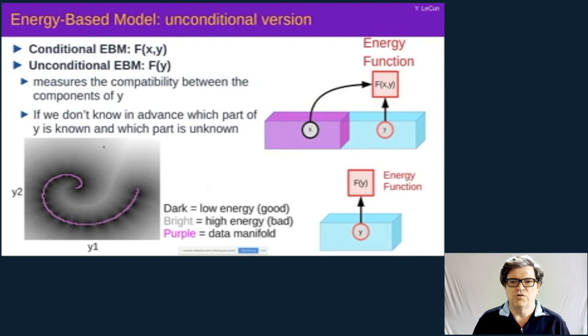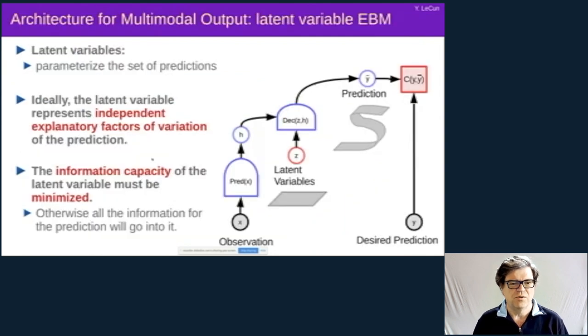There are conditional and unconditional versions of energy-based models. In conditional version, the variable x is the one that's always known, and y is the one that always needs to be predicted. In the unconditional version, the trick here is to train the machine to predict part of y from other parts of y where we never know which one is known and which one is unknown. So this is sort of capturing the mutual dependencies between the variables as symbolized by the drawing here on the bottom left that represents energy function, in this case here, learned with k-means, where the training samples are drawn on this little purple curve.